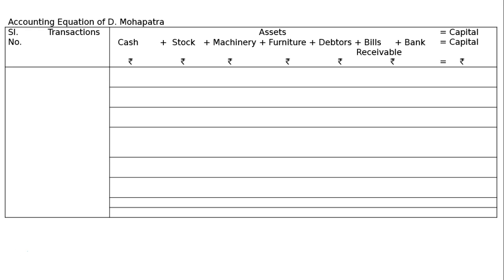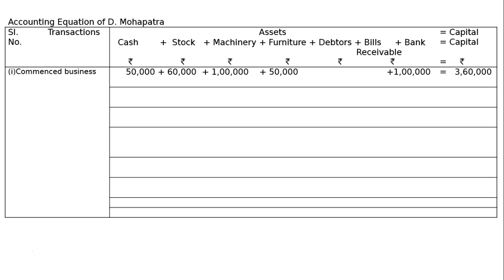Transaction 1: Started business with cash, stock, machinery, furniture, and bank. Cash rupees 50,000; stock rupees 60,000; machinery rupees 1 lakh; furniture rupees 50,000; bank balance rupees 1 lakh. Hence total assets equals rupees 3 lakhs 60,000, which equals total liabilities (capital).